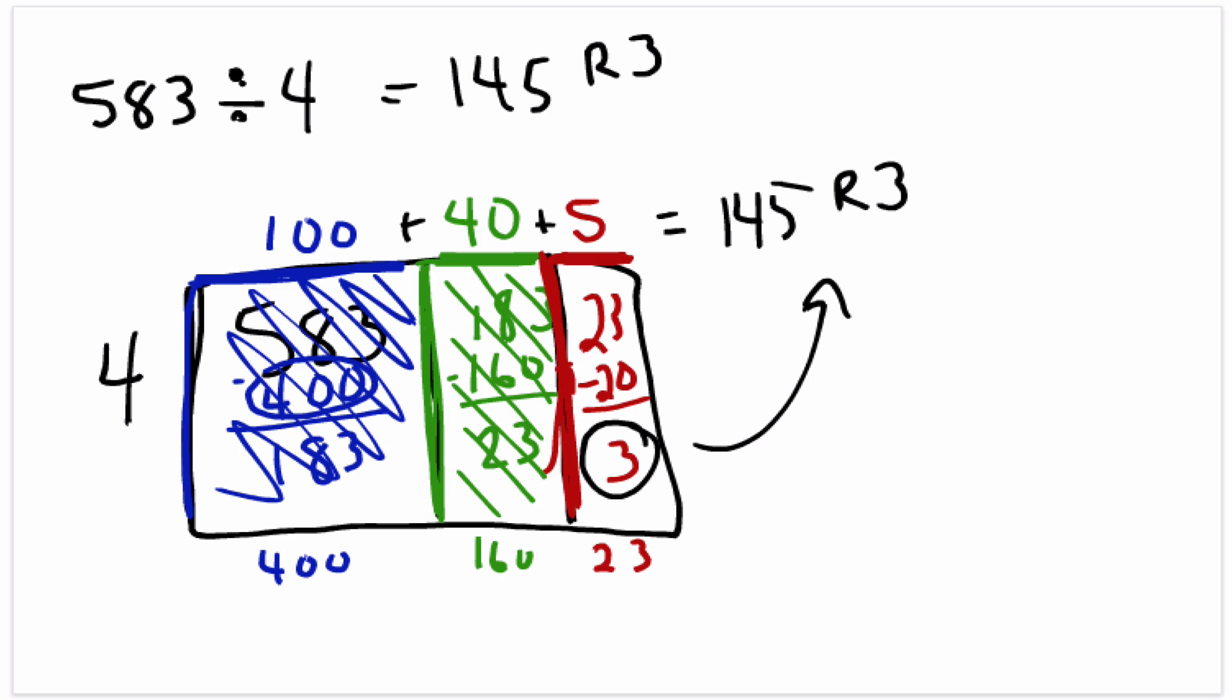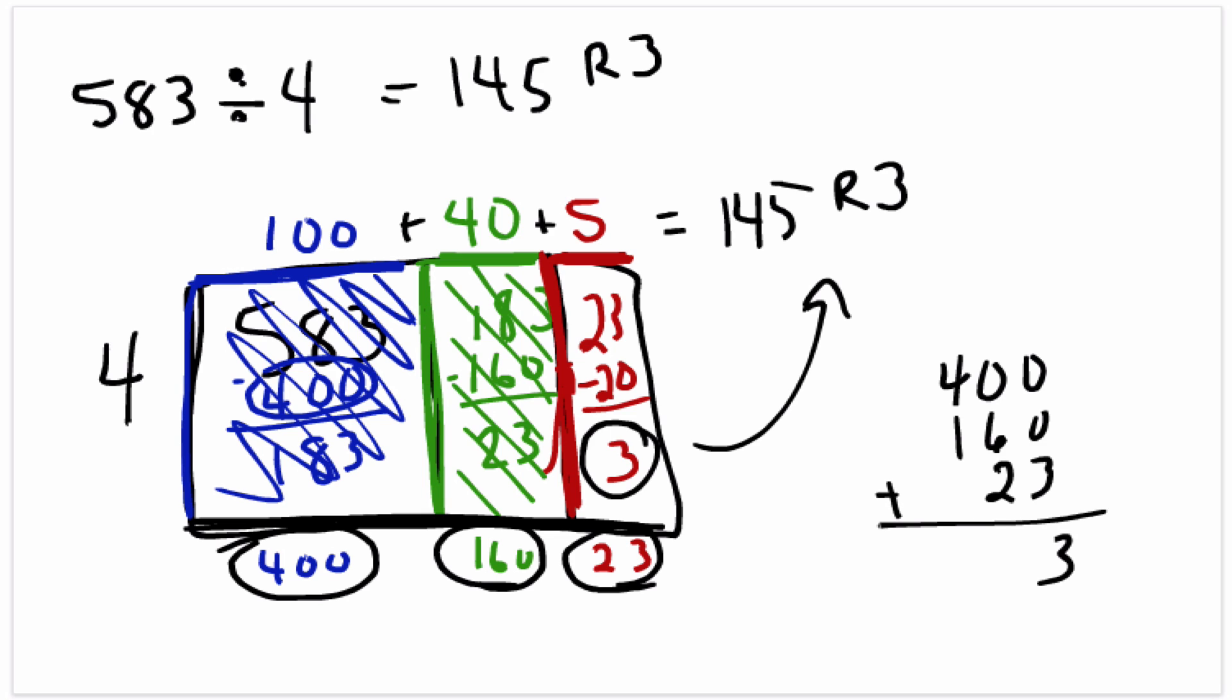And if we wanted to check it, first off, one way to check it is this down here. We know that the area of the blue rectangle is 400, the area of the green rectangle is 160, and the area of the red rectangle is 23. So if we wanted to, we can add those up. And sure enough, we get the 583 that we started with in the first place.